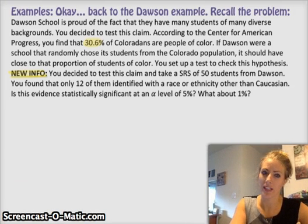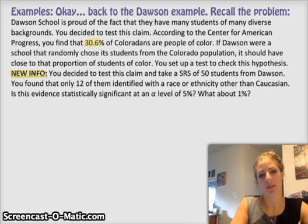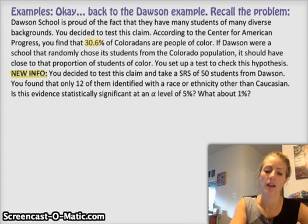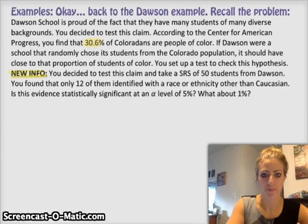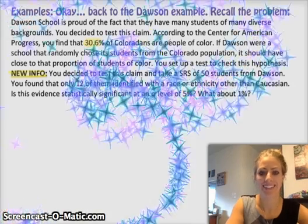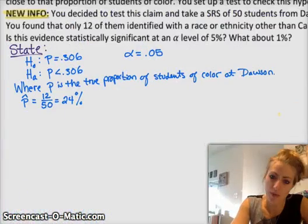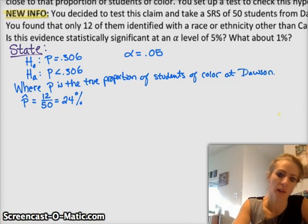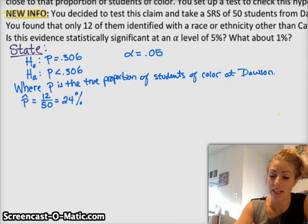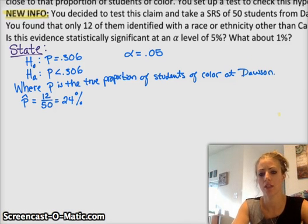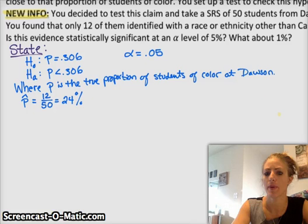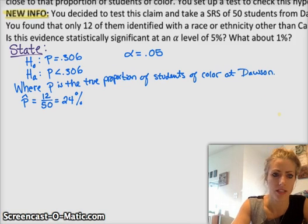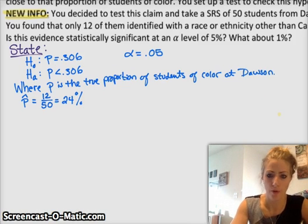You want to check, is this evidence statistically significant at an alpha level of 5%, and then perhaps at a 1% significance level. First and foremost, you got to state what you're doing, what your hypotheses are, and all that stuff. Our null hypothesis is that the true proportion P is equal to 0.306, which is the Colorado proportion. Our alternative hypothesis is we think that Dawson is going to have a smaller proportion than that. So we're only going to check the lower end. This is a one-sided test. I have my null hypothesis, my alternative hypothesis, I have my alpha level stated. I also state in context what the parameter is. P is the true proportion of students of color at Dawson. And then I stated what my statistic was, P hat, which was 12 over 50, that's 24%.